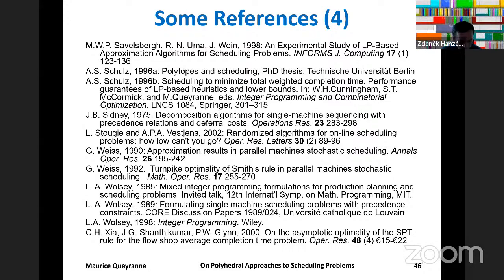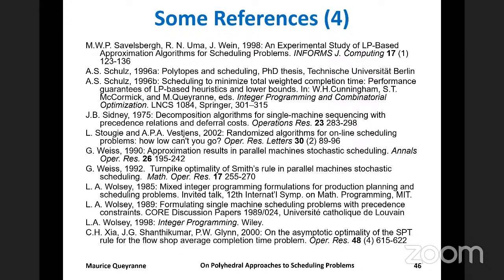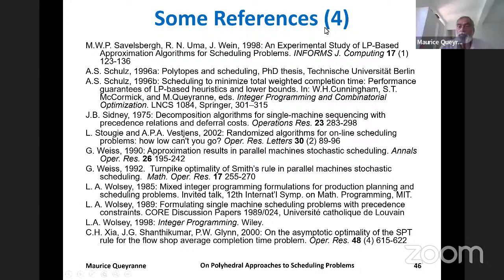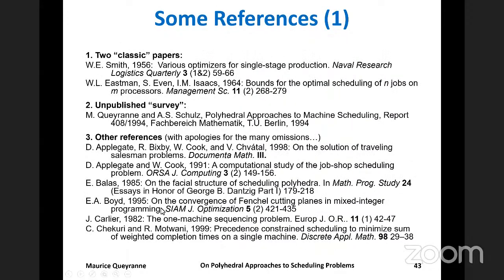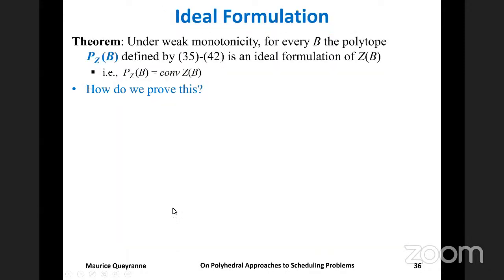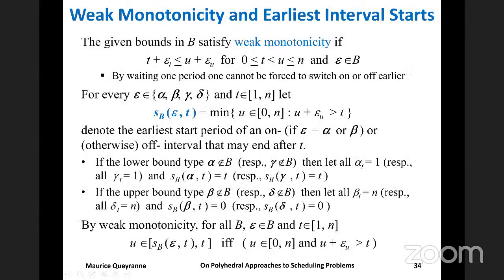I have two questions. First, from a YouTube viewer asking about slide 34: what is S_B defined as — the minimum of inequalities? S_B is the earliest start period of an on or off interval, relative to a particular lower or upper bound type and relative to period T. It is the earliest start period of an interval satisfying the corresponding bound that may end after T. The definition is given explicitly in slide 34, and this earliest start period is used as the lower limit of summations in inequalities 37 to 40.